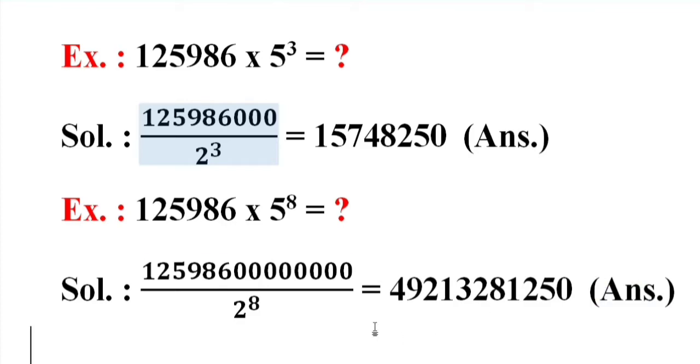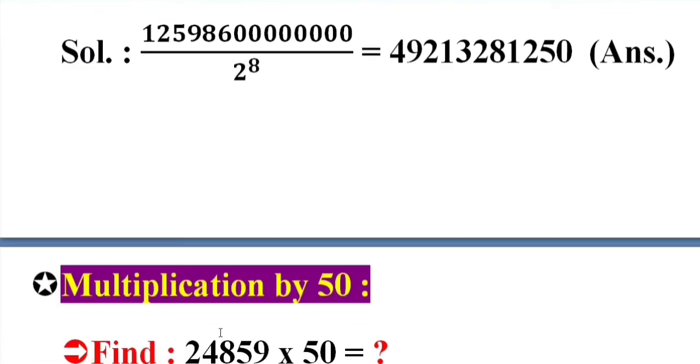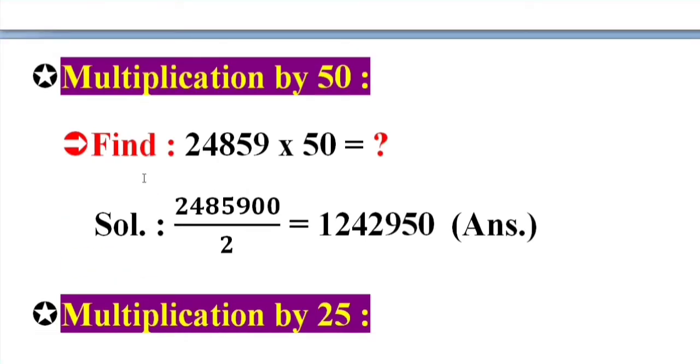Multiplication by 50. Find 24859 into 50 equal what? Solution: 2485900 by 2 equal 1242950. Answer.